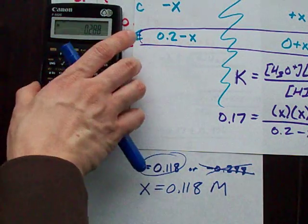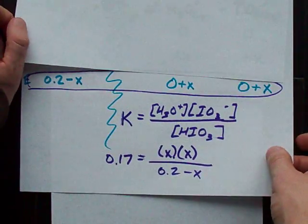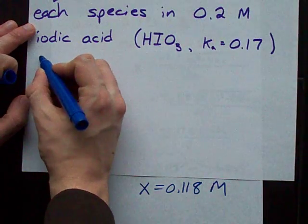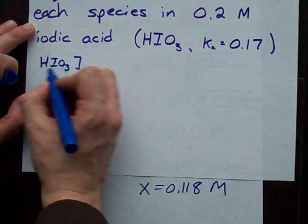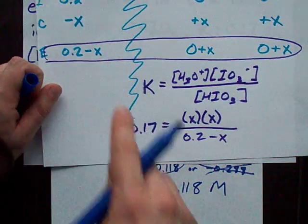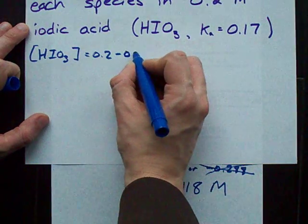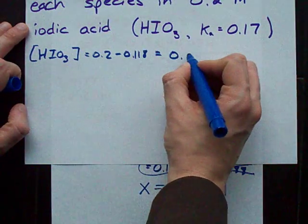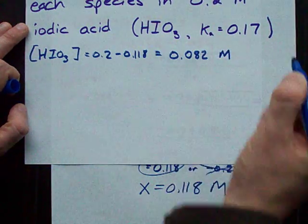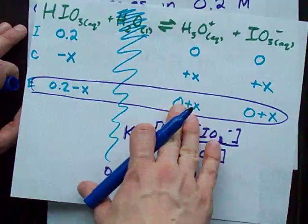Thus, the equilibrium concentration of each species is... Let's see if I can arrange all these so you can see them all. Which I can't. Oh well. Equilibrium concentrations of each species of HIO3, or iodic acid. The equilibrium concentration is 0.2 minus X. That's 0.118. That leaves me with 0.082 moles per liter.